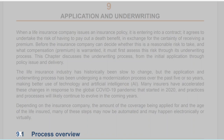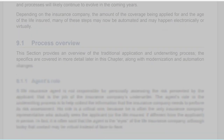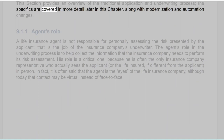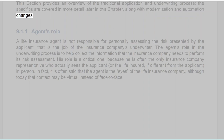Section 9.1: Process Overview. This section provides an overview of the traditional application and underwriting process. The specifics are covered in more detail later in this chapter, along with modernization and automation changes.